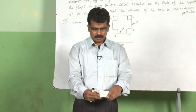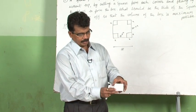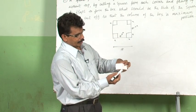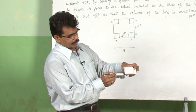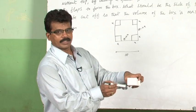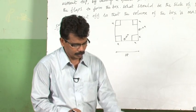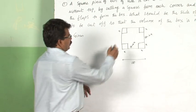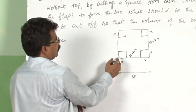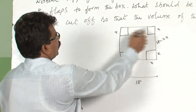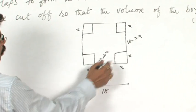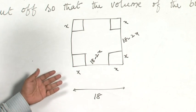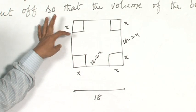A square tin sheet of total side 18 is taken, a square is cut off at each corner, and the flaps are folded to make a box. Now, what is the length of the box? The length is 18, the breadth is also 18, and the height of the box is x. At each corner, a square of side x is cut off and removed, and by folding the flaps, a box is prepared.